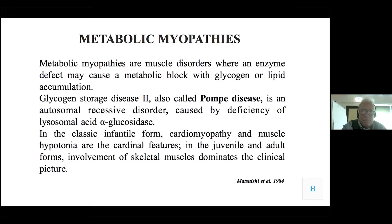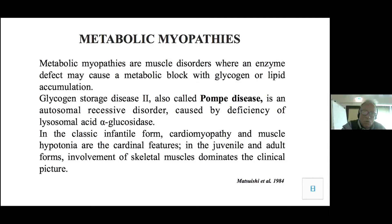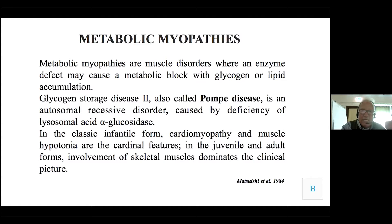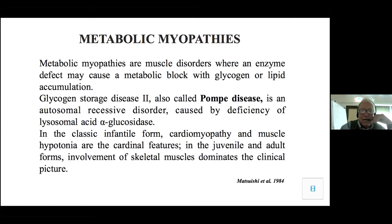Moving on to the second slide introducing metabolic myopathies: there are a number of muscle disorders where an enzyme defect causes a metabolic block. One of the most well-known is Pompe disease, also known as glycogen storage disease type 2, which is due to a lysosomal deficiency of acid glucosidase, as demonstrated by Hers.